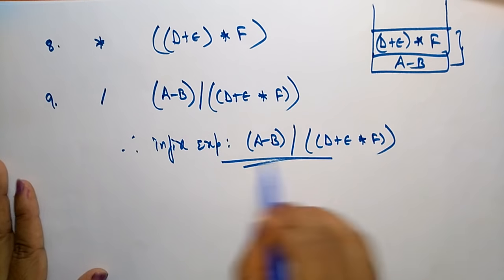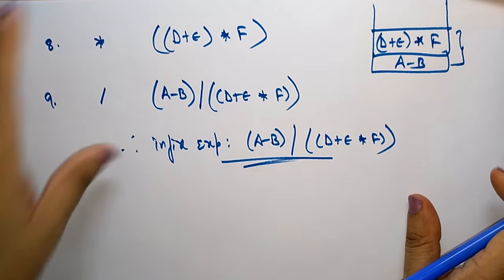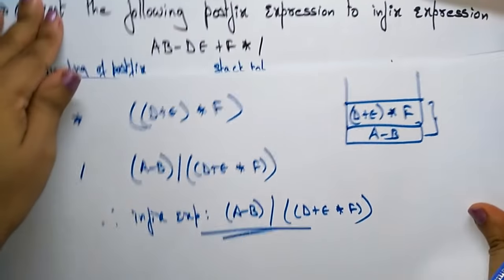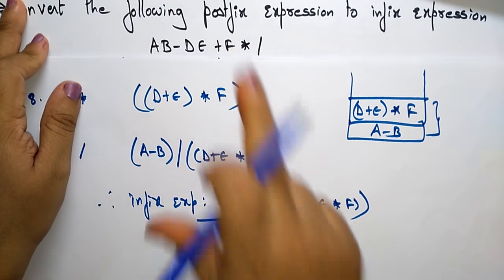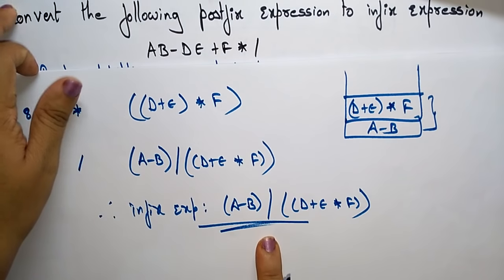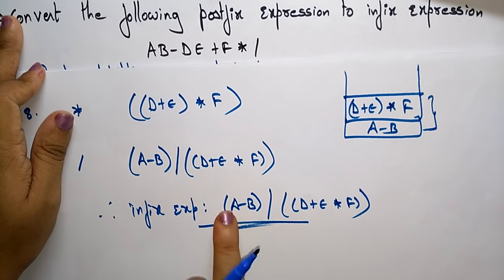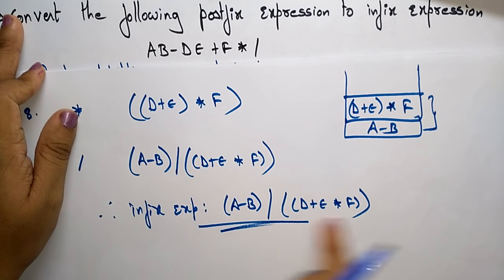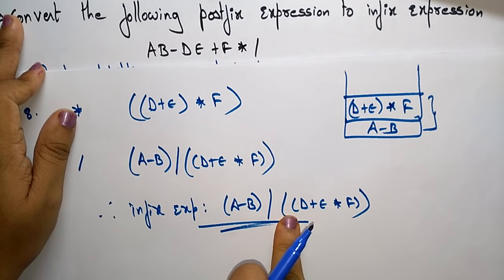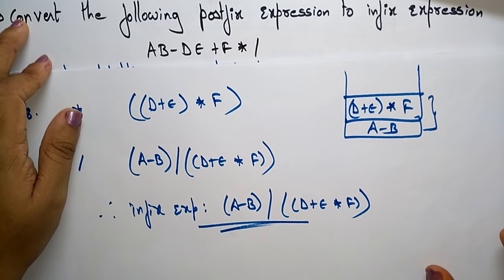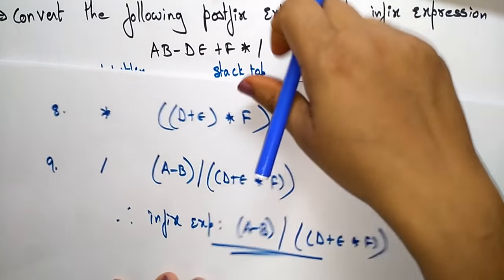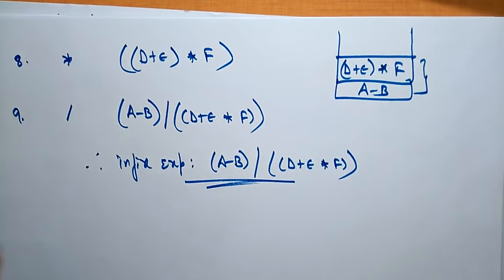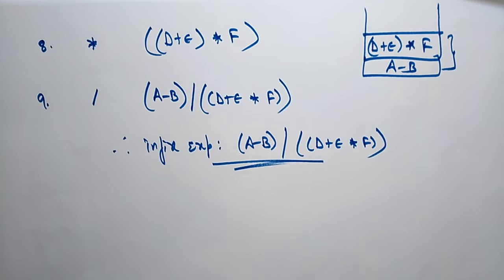This is how you convert a given postfix expression — which has operators after the operands — into an infix expression, where two operands have an operator in between. This is the regular format of the infix expression. This is how you convert postfix to infix. Thank you.